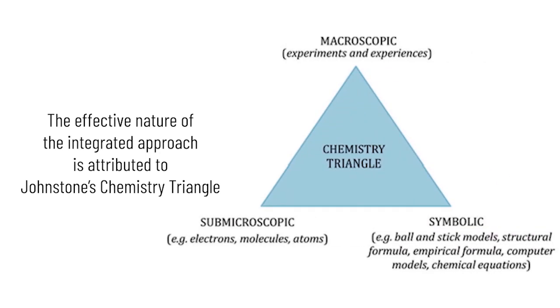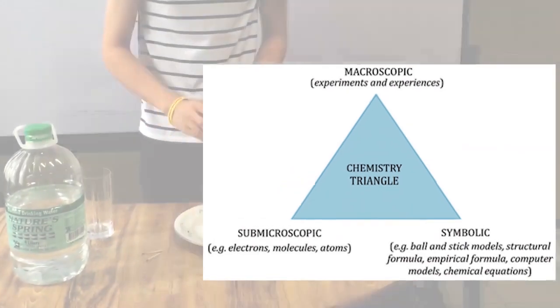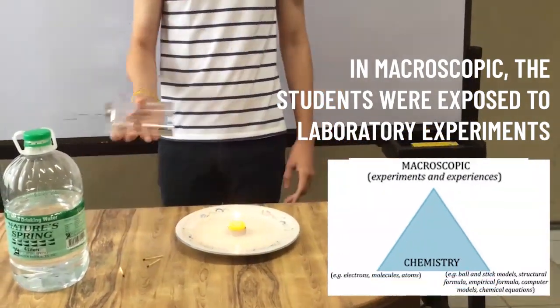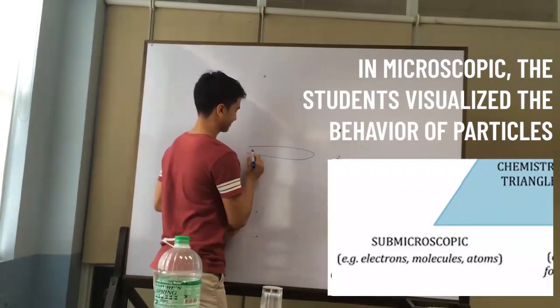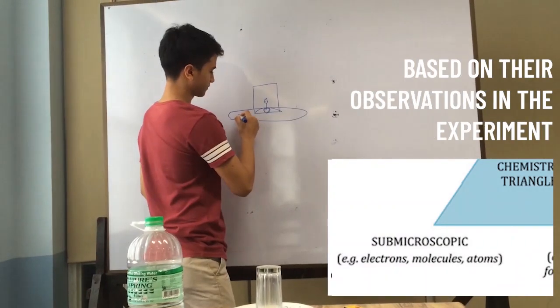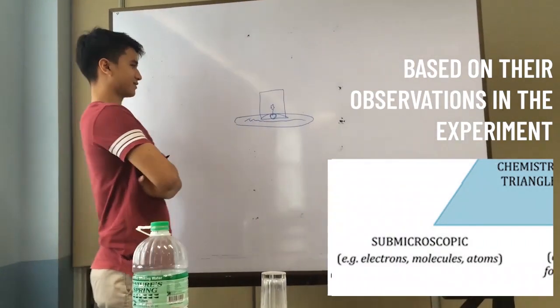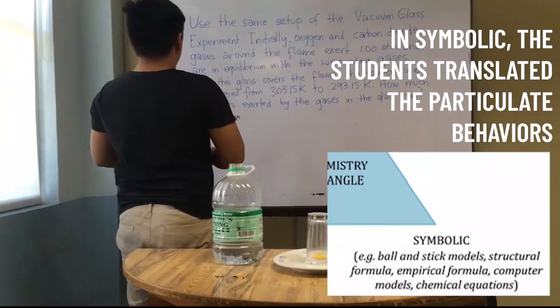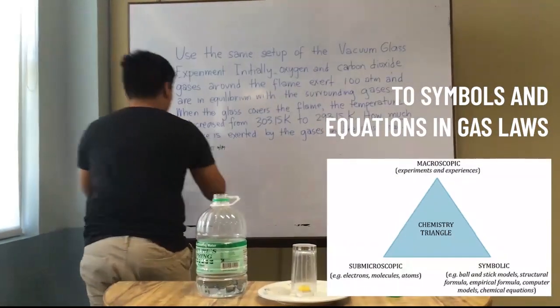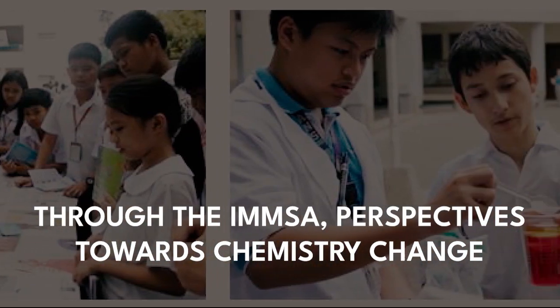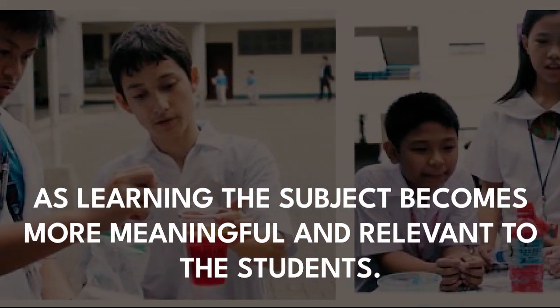is attributed to Johnstone's chemistry triangle. In macroscopic, students were exposed to laboratory experiments. In microscopic, students visualized the behavior of particles based on their observations in the experiment. In symbolic, students translated the particulate behavior to symbols and equations in gas laws. Through the IMMSA, perspectives towards chemistry change as learning the subject becomes